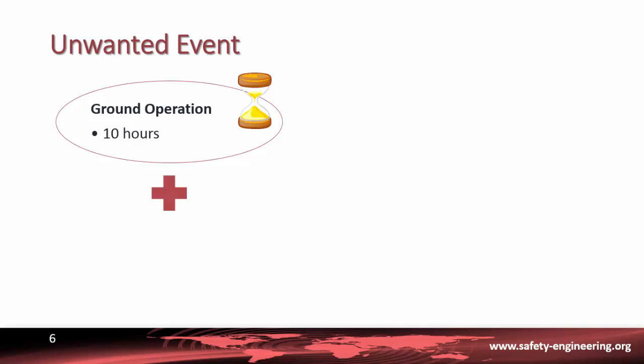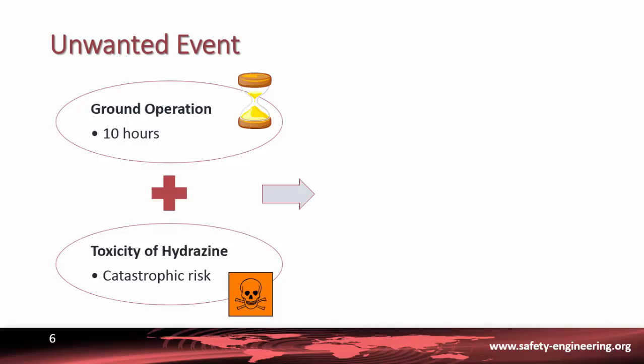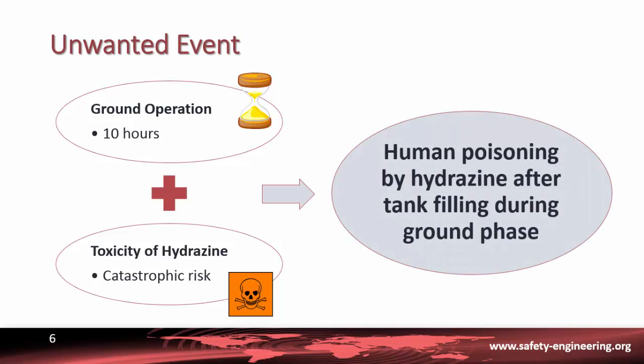Due to the toxicity of hydrazine, a leak would represent a catastrophic event during the ground phase. We will develop our fault tree analysis considering, as the unwanted event, human poisoning by hydrazine after the tank filling activity during the ground phase.